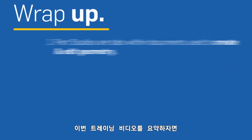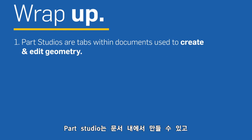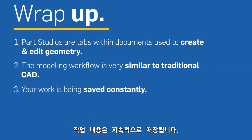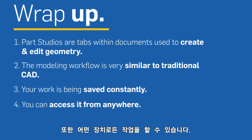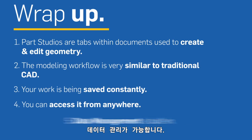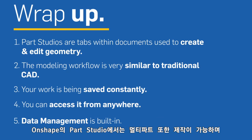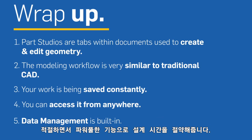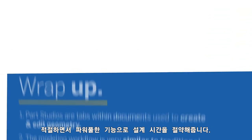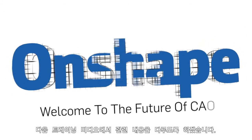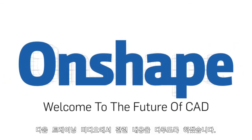Let's summarize. Part Studios are tabs within documents used to create and edit part geometry, and the modeling workflows are very similar to traditional CAD. Your work is saved constantly and you can access it from any device. Data management is built in. Onshape Part Studios also enables you to design multiple parts together, which dramatically saves time and ensures proper fit and function — and that's the topic of our next video.